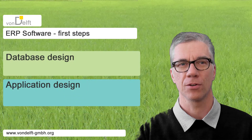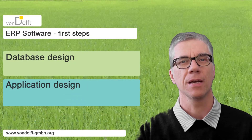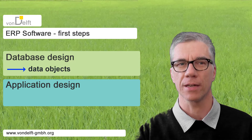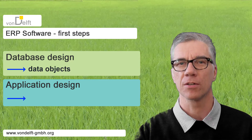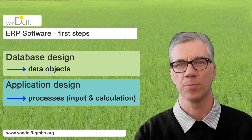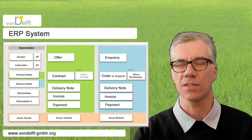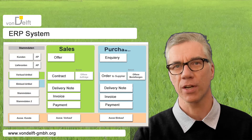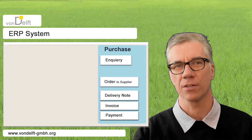There is database and application design. In simple words, we need to know which data objects we are dealing with and what kind of processes shall be supported by the application. In this ERP system with sales and purchase, we will concentrate on purchase.